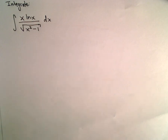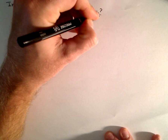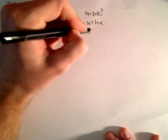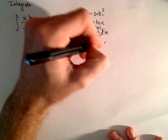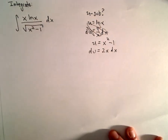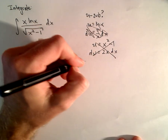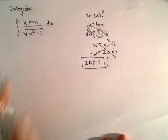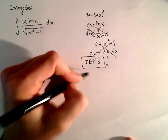The first thing I think of is: do I just know it? In this case, I don't know an antiderivative for that off the bat. The next thing is: is there any sort of u-substitution that would work? If we let u equal ln(x), then du would be 1/x dx — I don't see how that gets me anywhere. Even if u equals x²-1, du would be 2x dx, but that still doesn't account for the ln(x), so that doesn't help either.